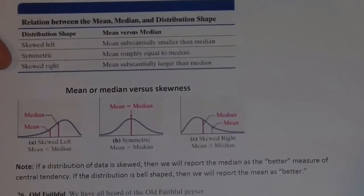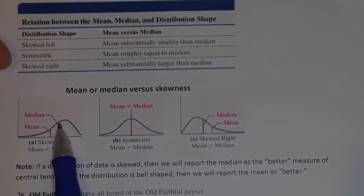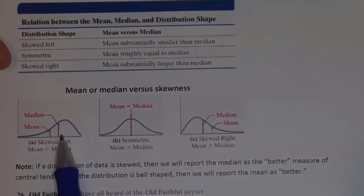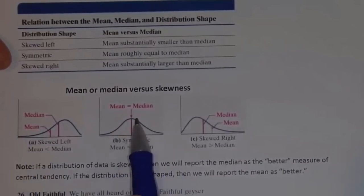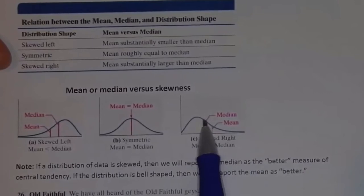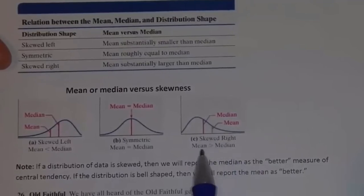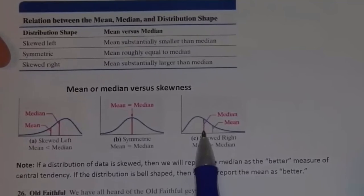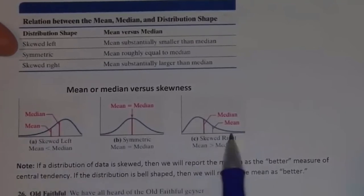For a skewed-left distribution, the mean is pulled toward the left and the median is better placed at center. For a bell-shaped distribution, the mean and median are approximately equal. For a skewed-right distribution, the median is here and the mean is pulled to the right by the few large values. These are general rules — there can be some bizarre exceptions, but they hold as a general principle.